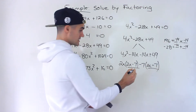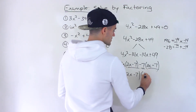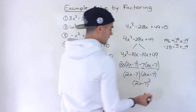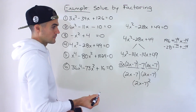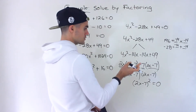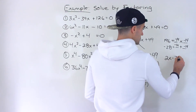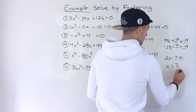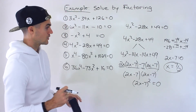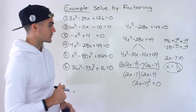Both brackets are the same — 2x minus 7 — so this is a perfect square trinomial equal to 2x minus 7 squared. Setting it equal to zero, there's only one factor, so x equals 7 over 2, or 3.5. There is only one solution to this quadratic equation. Sometimes you'll get a perfect square like this with just one repeated solution.